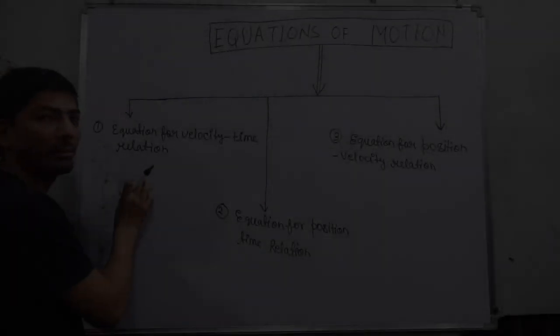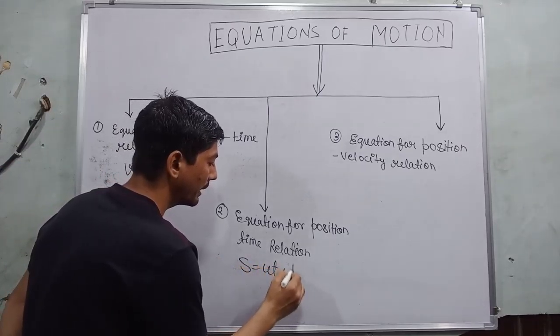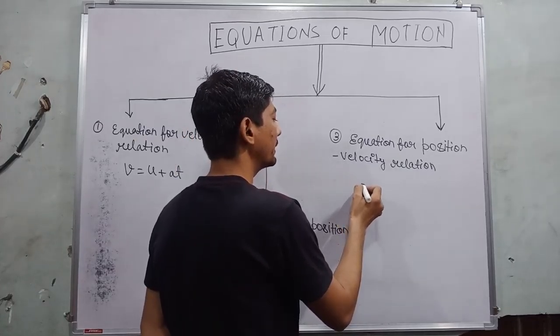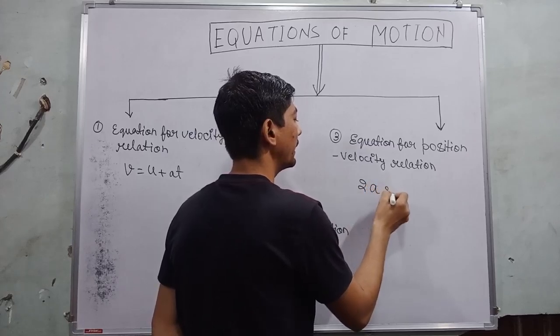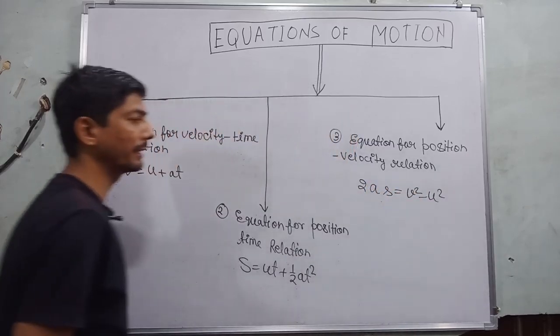Formula of first equation of motion: v = u + at. Formula of second equation of motion: s = ut + (1/2)at². Formula of third equation of motion: 2as = v² - u², where...